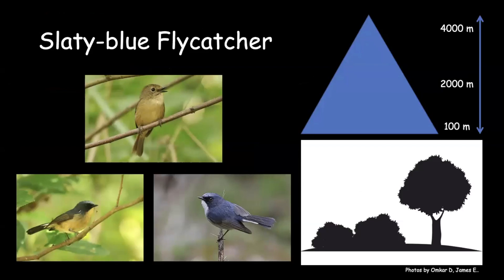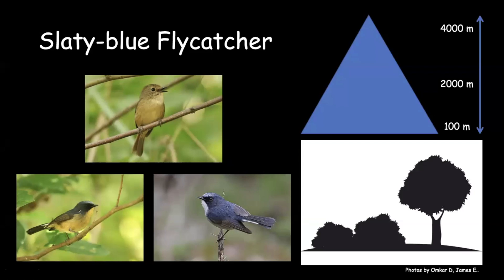The slaty-blue flycatcher has two distinct populations — the south Assam Hills population and the western Himalayan population. The south Assam Hills population shows a nice rufous belly compared to the white-bellied birds north of the river Brahmaputra. Females are also a lot more pale compared to slaty-backed flycatcher. Found up to 2,000 meters, wintering all the way to lower elevations. Always in undergrowth. Slaty-blue flycatcher is a lot bolder compared to slaty-backed flycatcher.